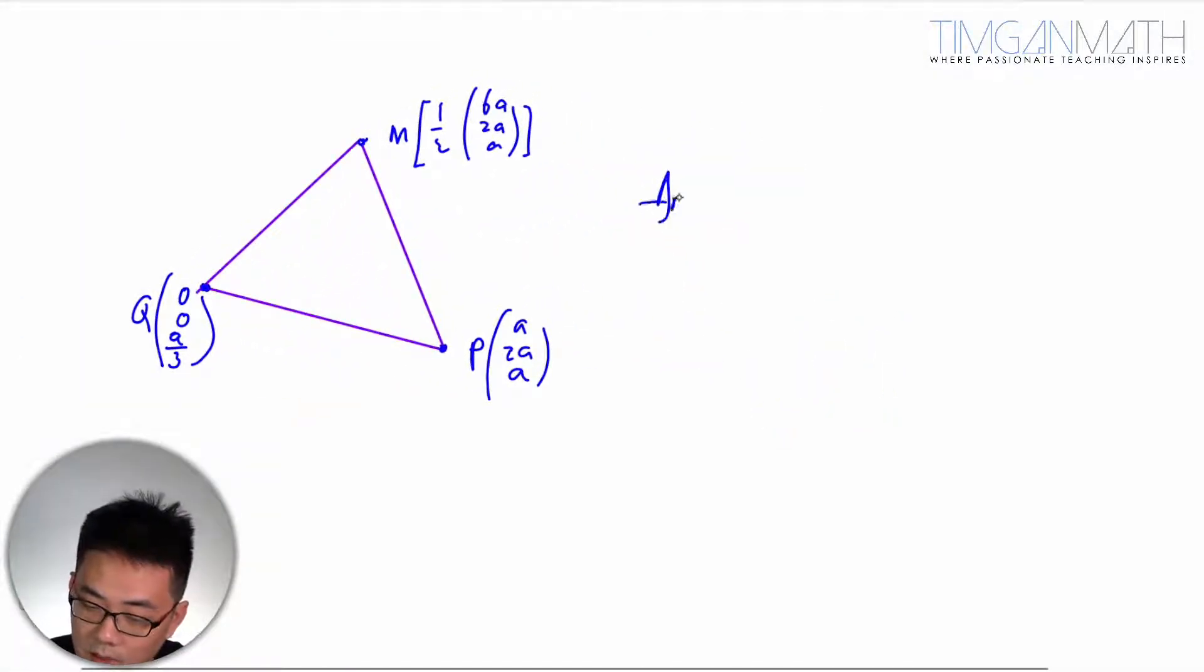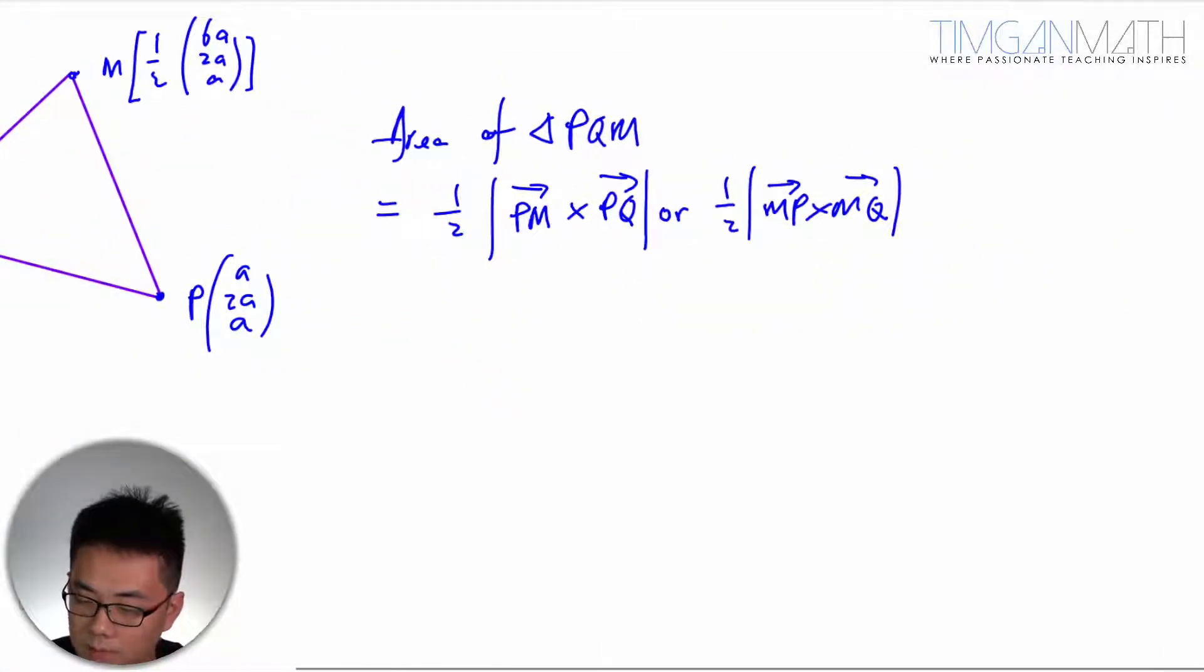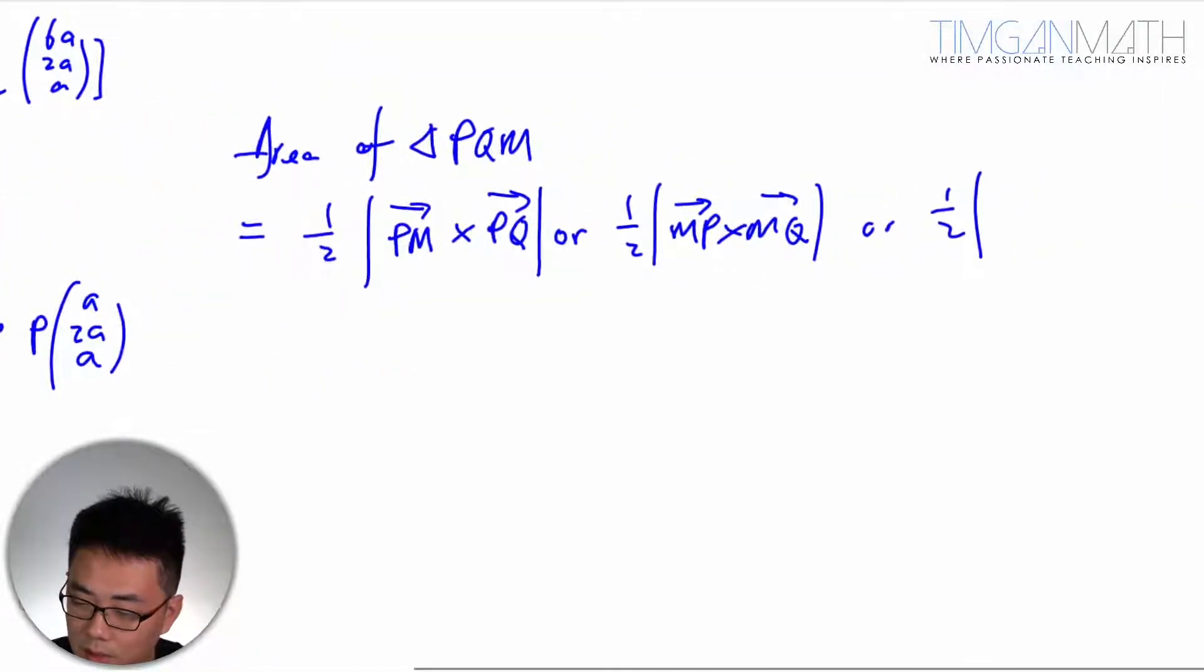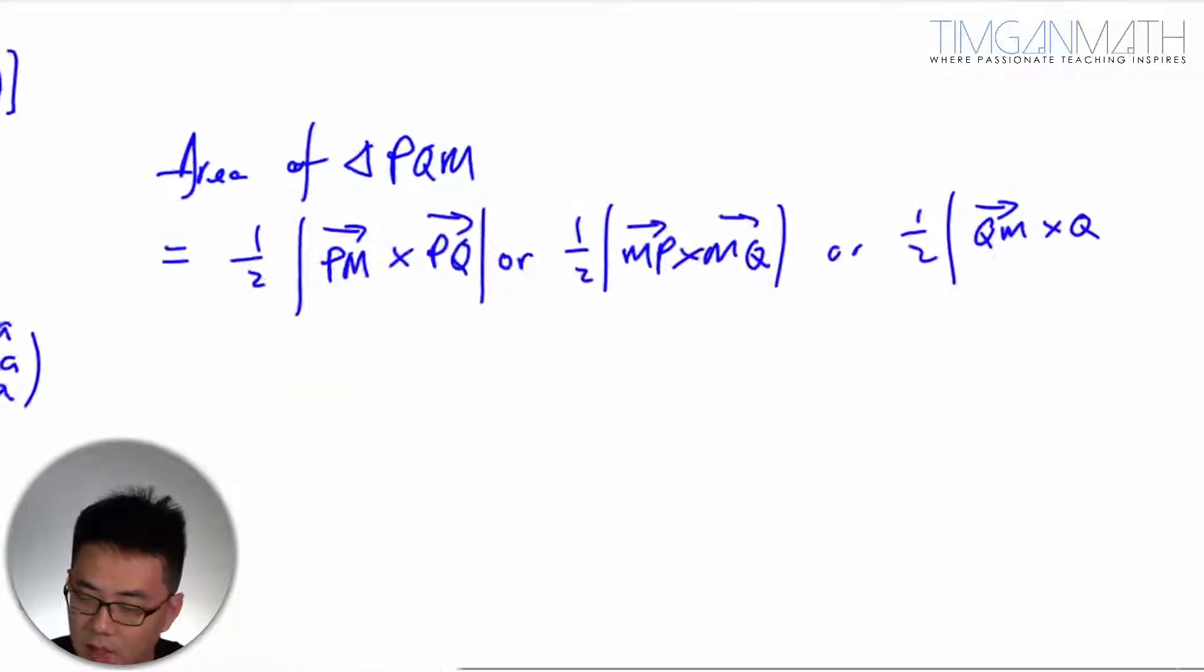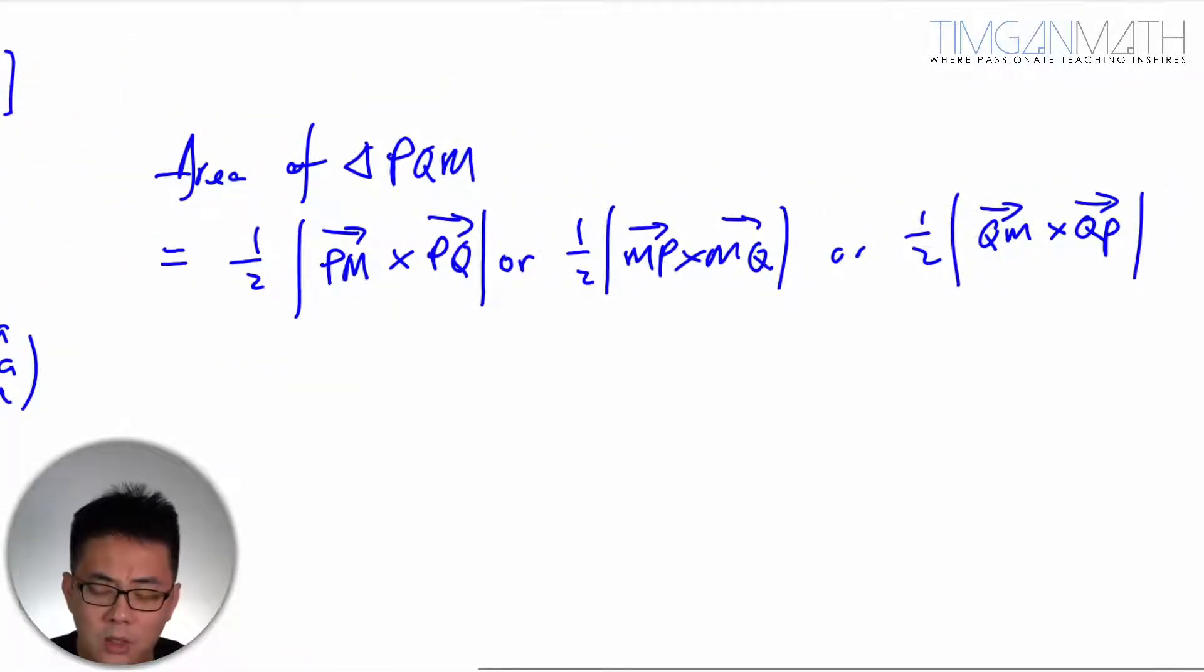So area of this, area of triangle PQM, you can take any adjacent side and cross them. So it could be PM cross with PQ, or it could be half MP cross with MQ, or it could be QM cross with QP. It really doesn't matter which one you pick. You should get the same answer.